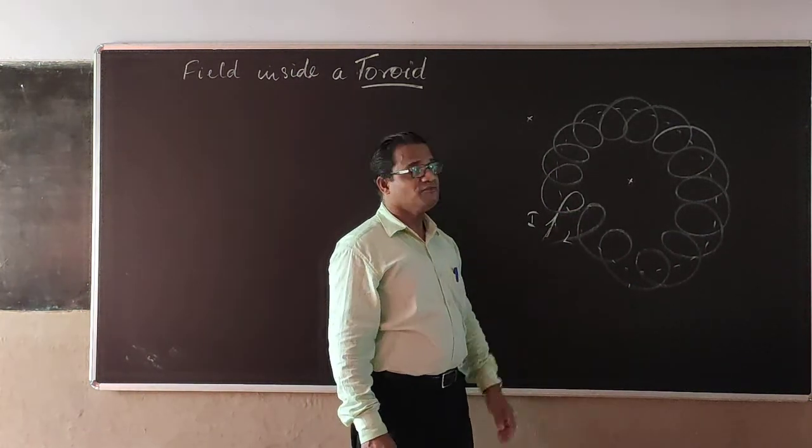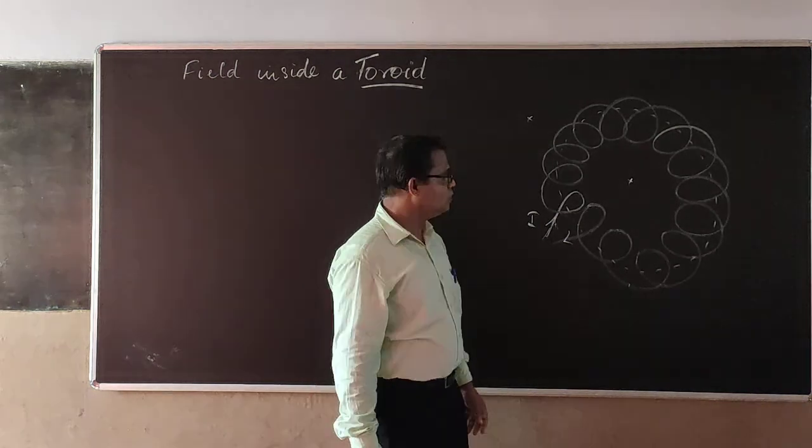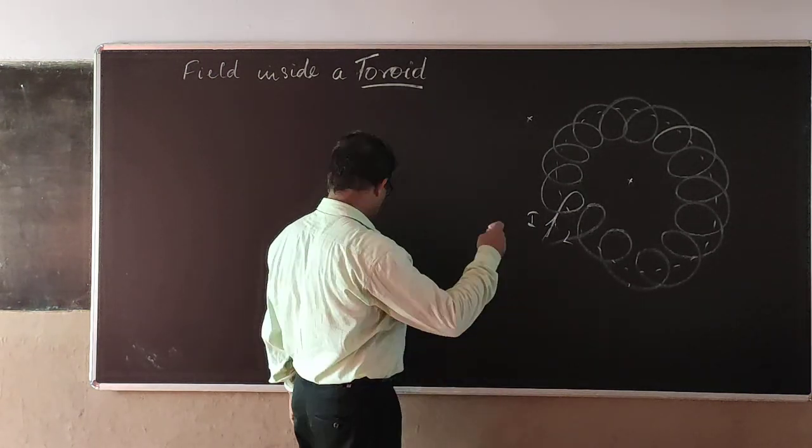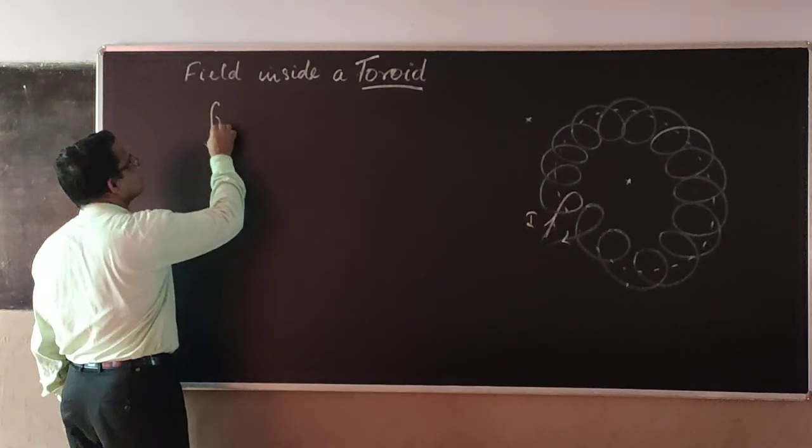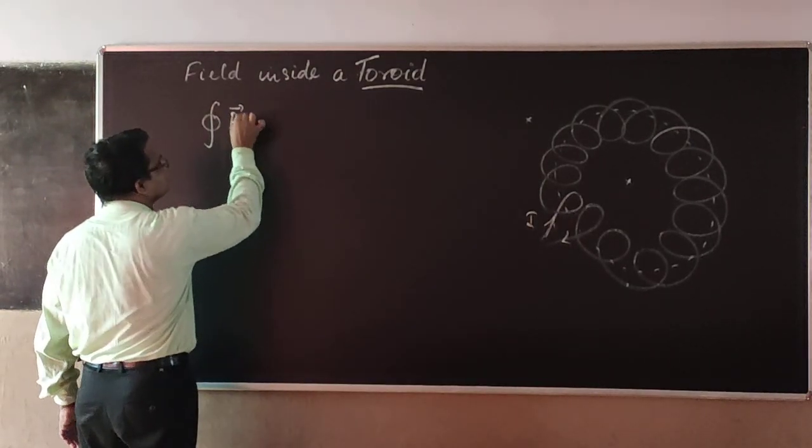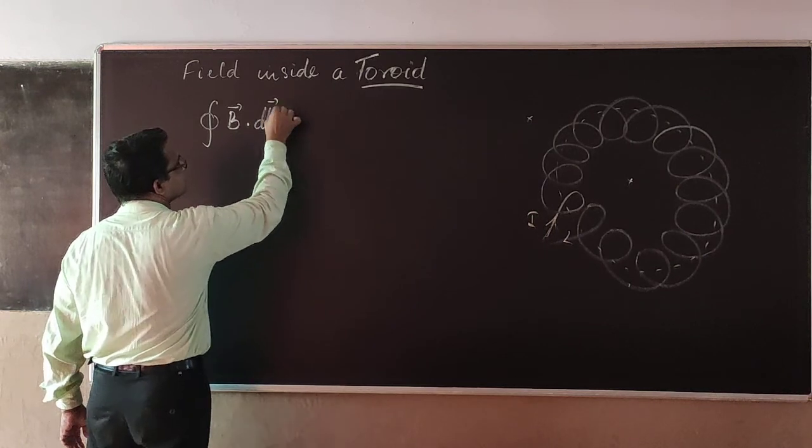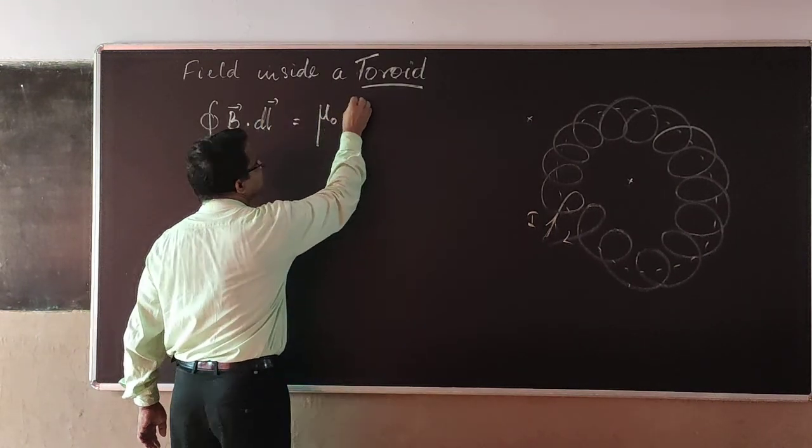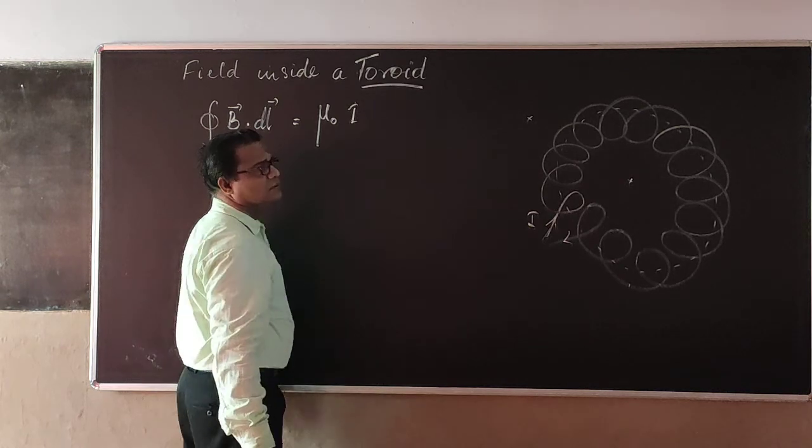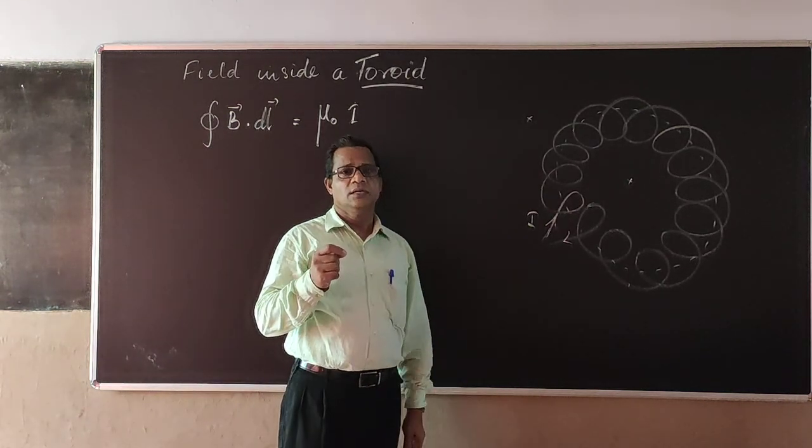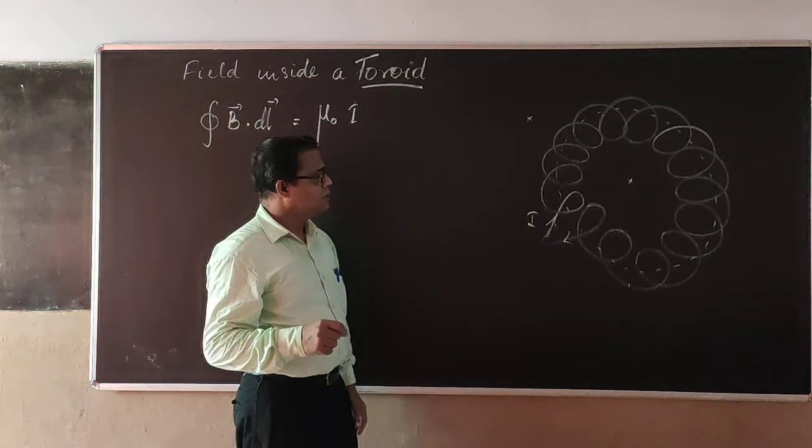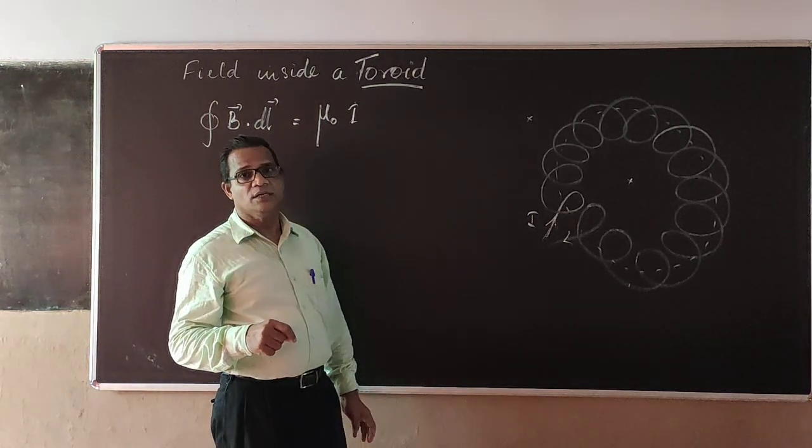And how much is that field? Let us find out. By applying Ampere's circuital law, we know that closed integral B dot dL is equal to μ₀ times enclosed I, where I is the current enclosed by the field loop.